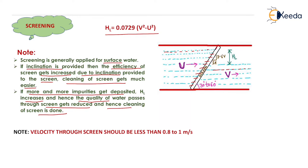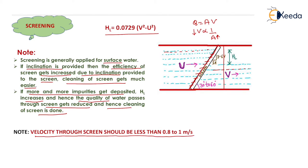Using the continuity equation, Q = Av. If discharge is constant, velocity is inversely proportional to area. Due to the inclination, surface area increases, so velocity decreases before the screen. After screening, the surface area decreases again, so velocity increases. We want a smaller velocity before the screen so that all the impurities will be removed from the water. The velocity through the screen should be less than 0.8 to 1 meter per second.